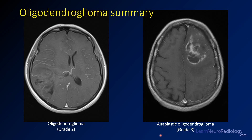Here's a summary of oligodendrogliomas. The grade 2 oligodendroglioma shows very little enhancement, in contradistinction to the grade 3 case, which has a ton of enhancement and a little more mass effect — indicating the higher grade.